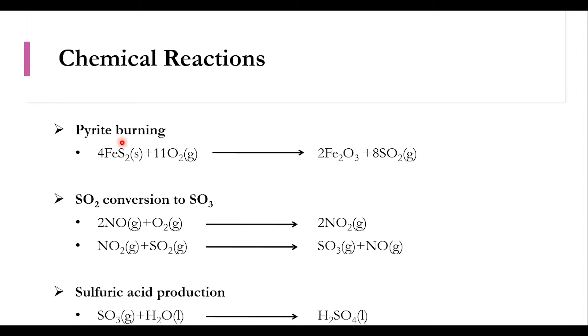The reactions occurring include: pyrite burning - 4 moles of pyrite reacts with 11 moles of oxygen to form 2 moles of iron oxide and 8 moles of sulfur dioxide. Second, SO2 to SO3 conversion - 2 moles of NO react with oxygen to form 2 NO2, and NO2 reacts with SO2 to form SO3 and NO. Last, sulfuric acid production - SO3 reacts with water to form sulfuric acid.